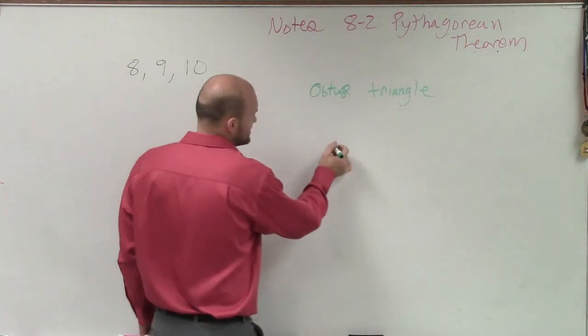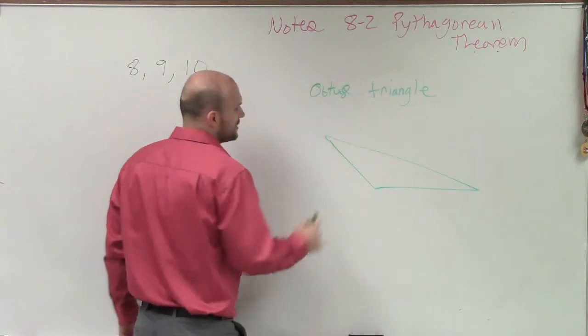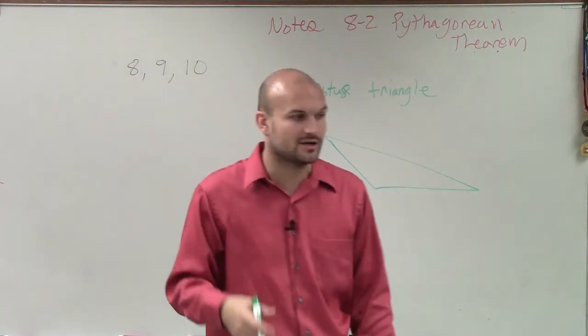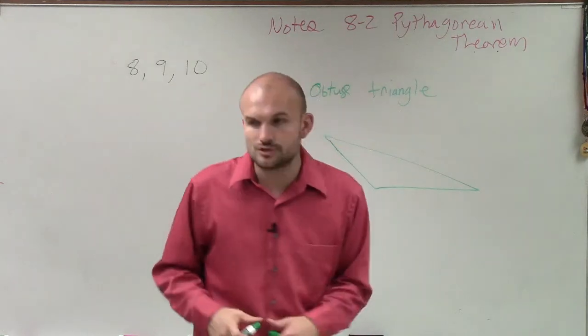Obtuse angle is the same thing. You're only allowed one obtuse angle. So if you have an obtuse angle on a triangle, it's what we call an obtuse triangle.